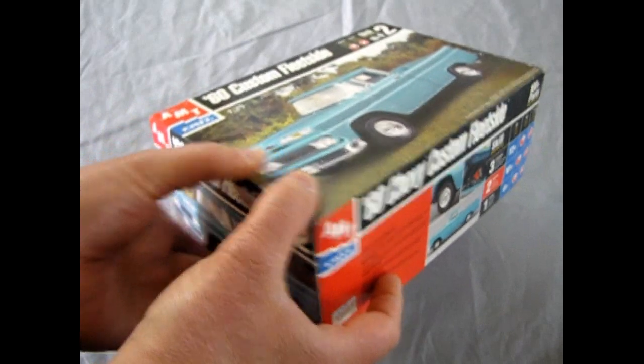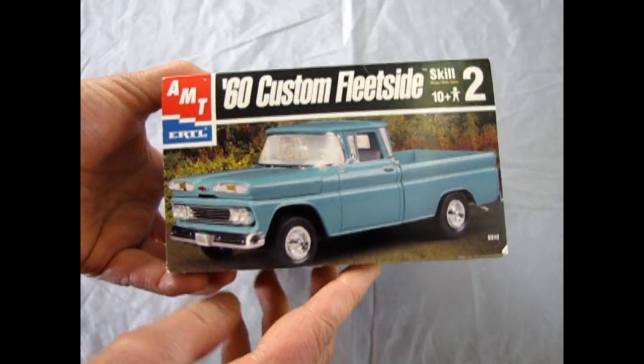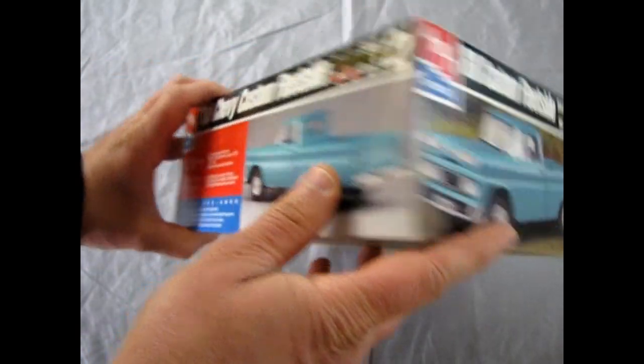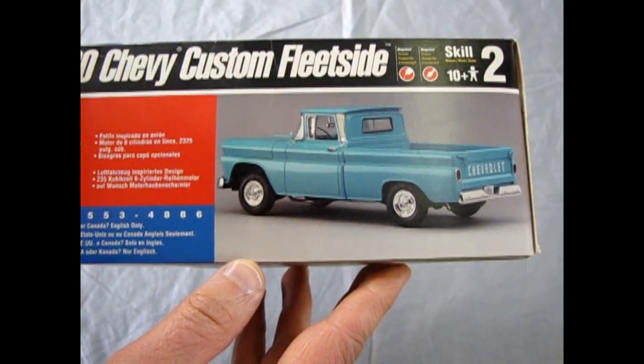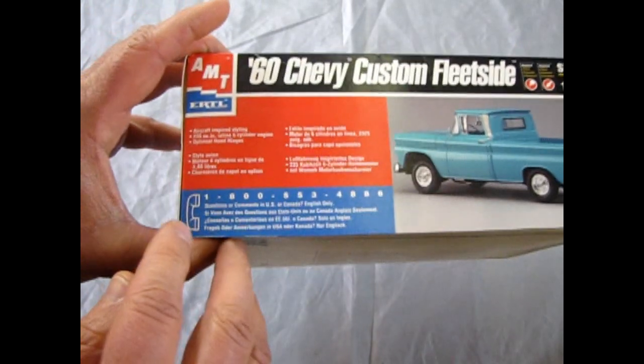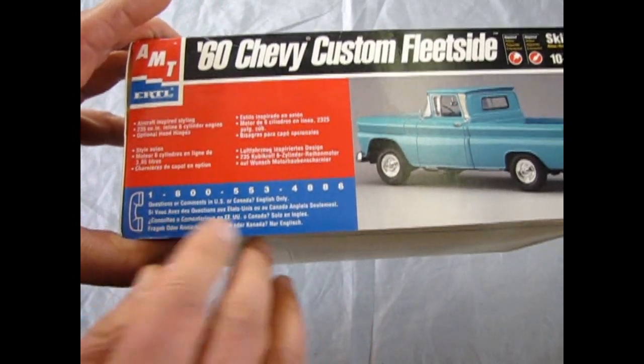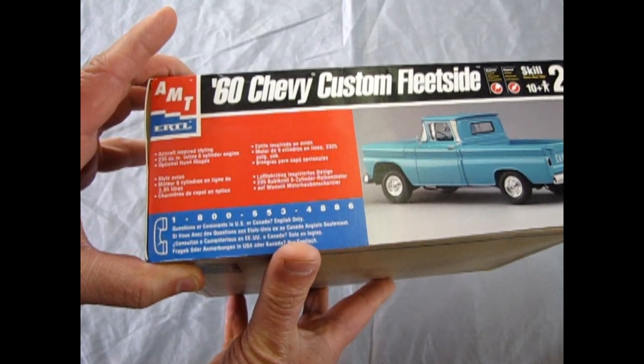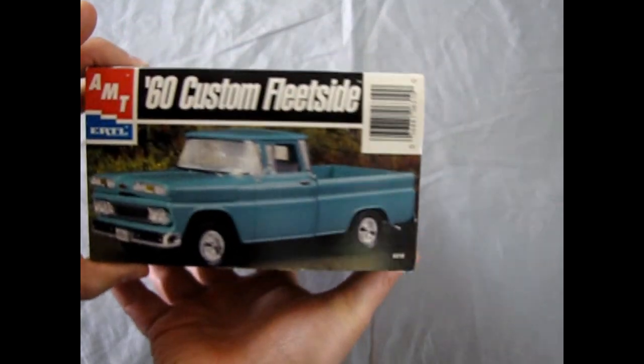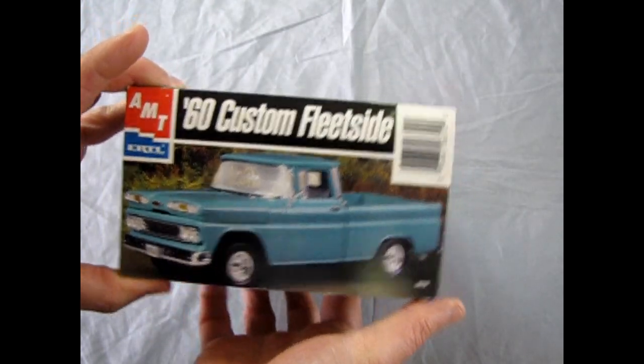When we turn here on this side, we get the top of the box. Here is a good rear three-quarter of the built model. And you can always phone this number if you have any questions, or at least you could in 1998. I don't know about now. Somebody try it. Let us know. And our barcode on this side.